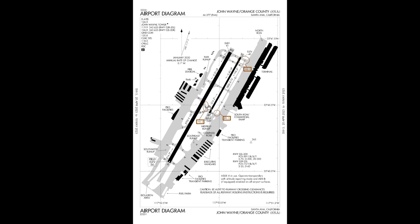Also study the chart for hotspots — those red circles indicate where runway incursions are most likely to occur. You can also think about where you'll be taxiing after landing: there are plenty of FBOs and general aviation parking at John Wayne. Having that plan in mind means when you land you'll know which way to exit the runway and what your likely taxi instructions are, making the whole post-landing process a little less stressful.